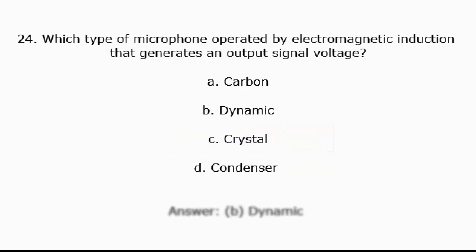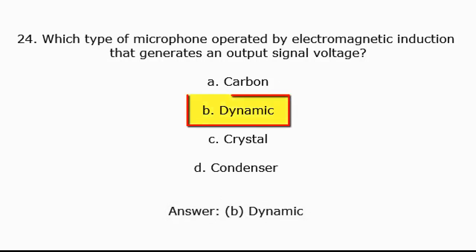Question 24: Which type of microphone operates by electromagnetic induction that generates an output signal voltage? A. Carbon, B. Dynamic, C. Crystal, D. Condenser. Answer: B. Dynamic.